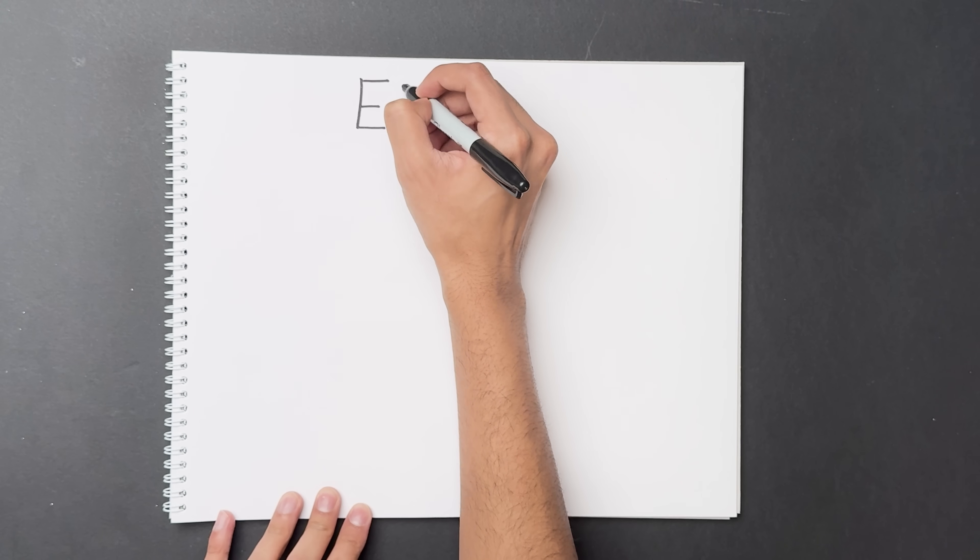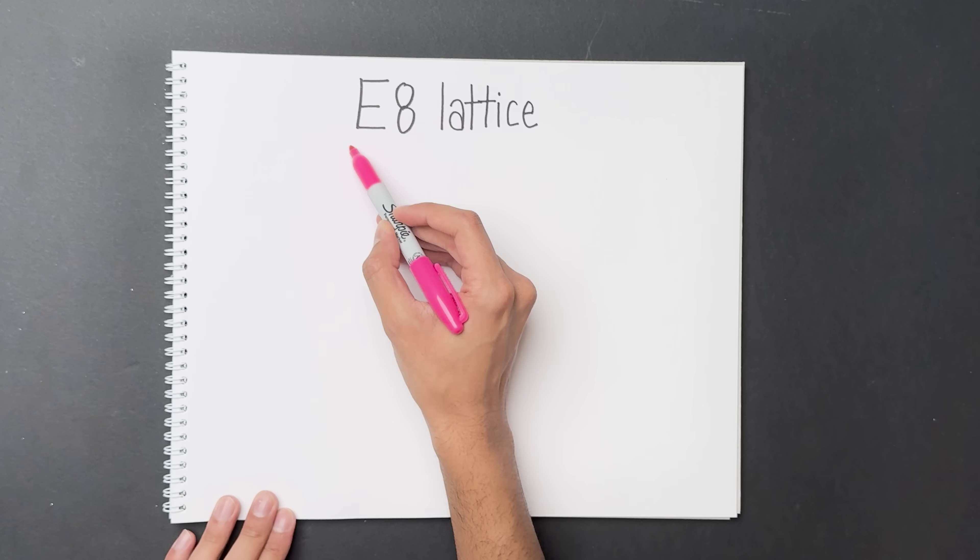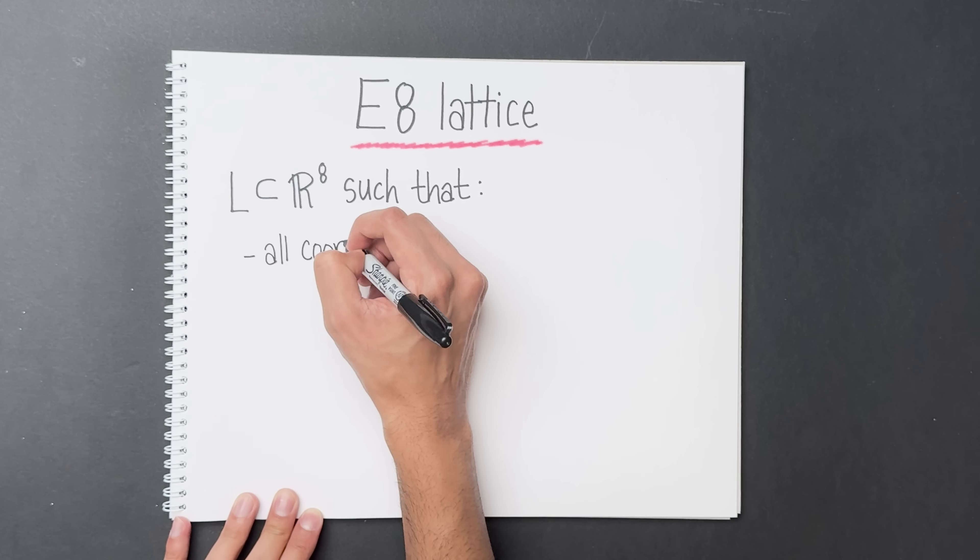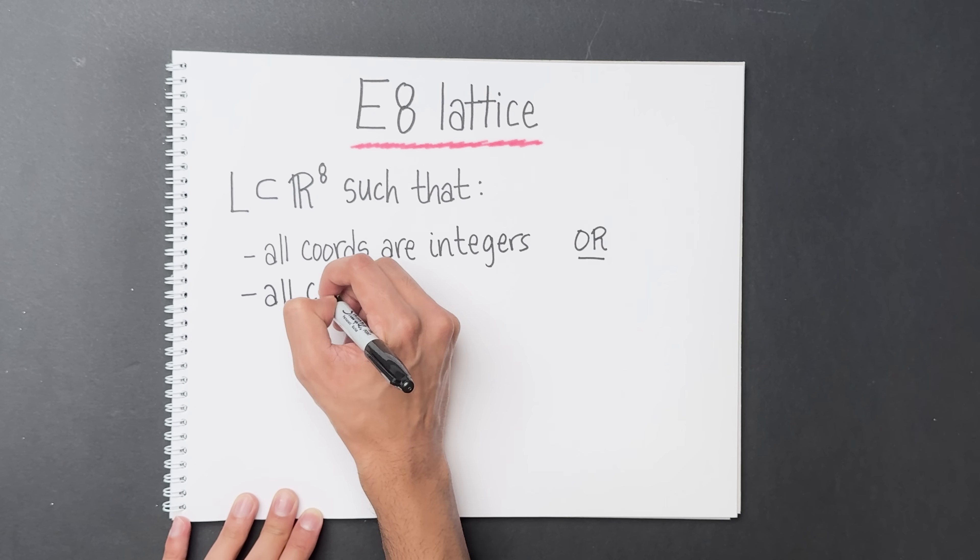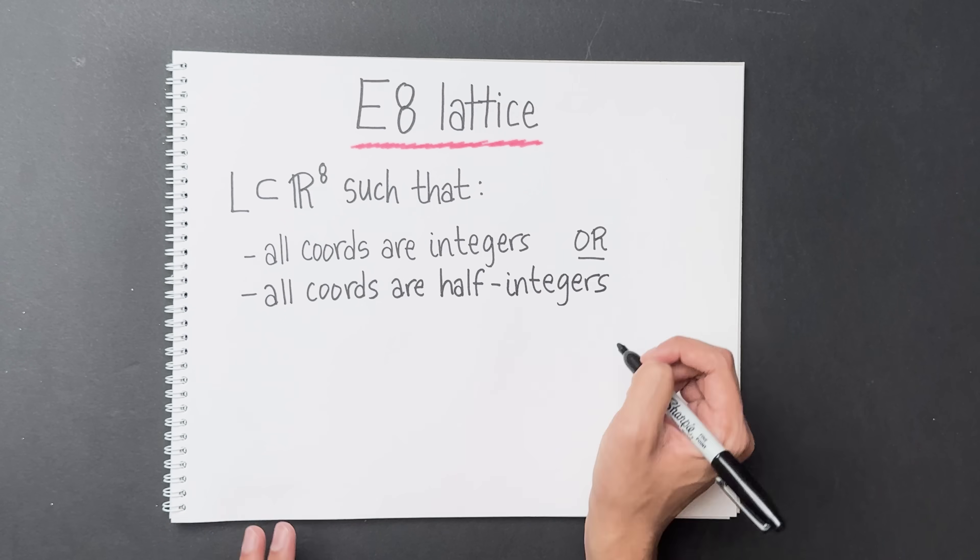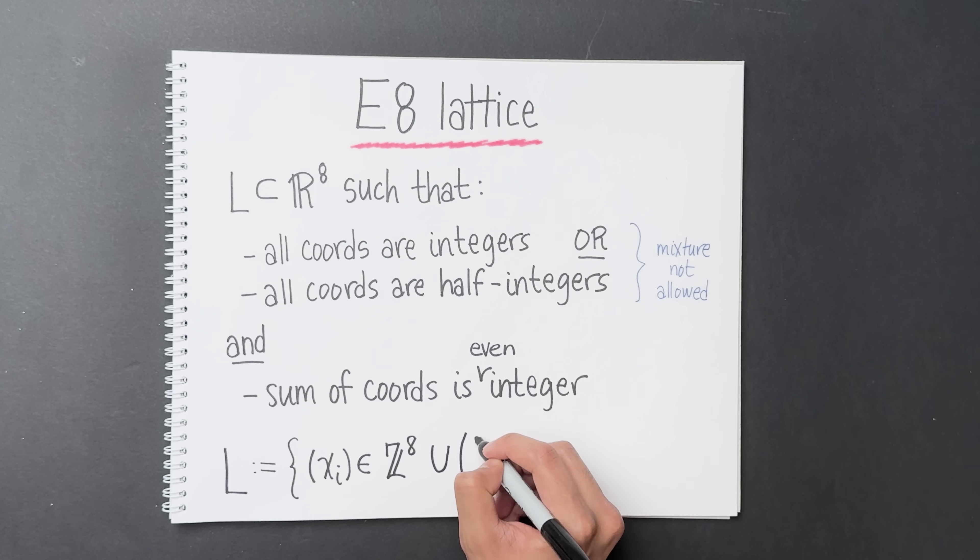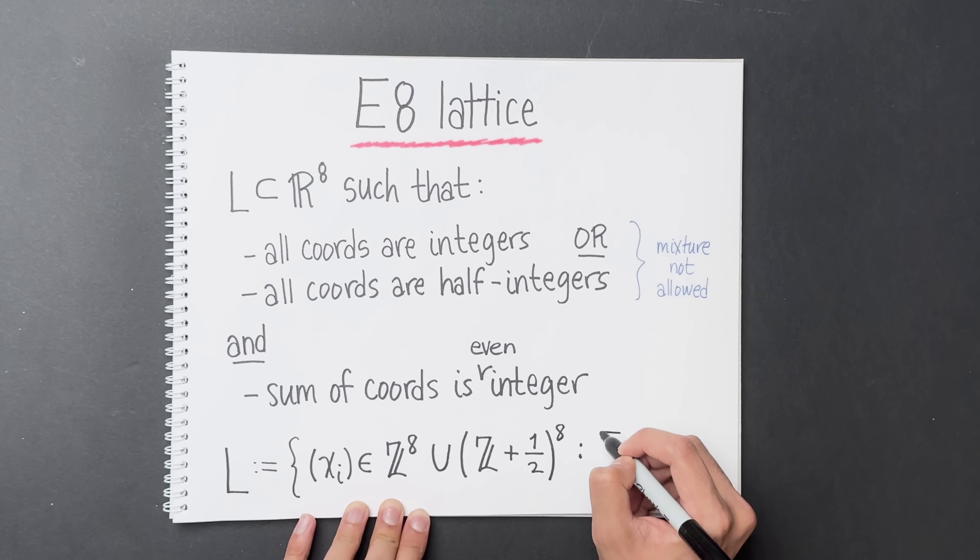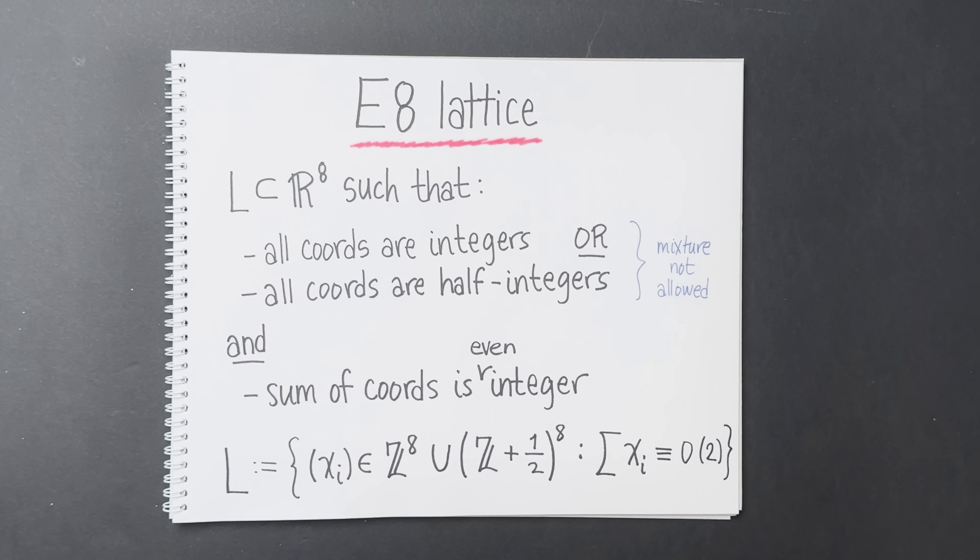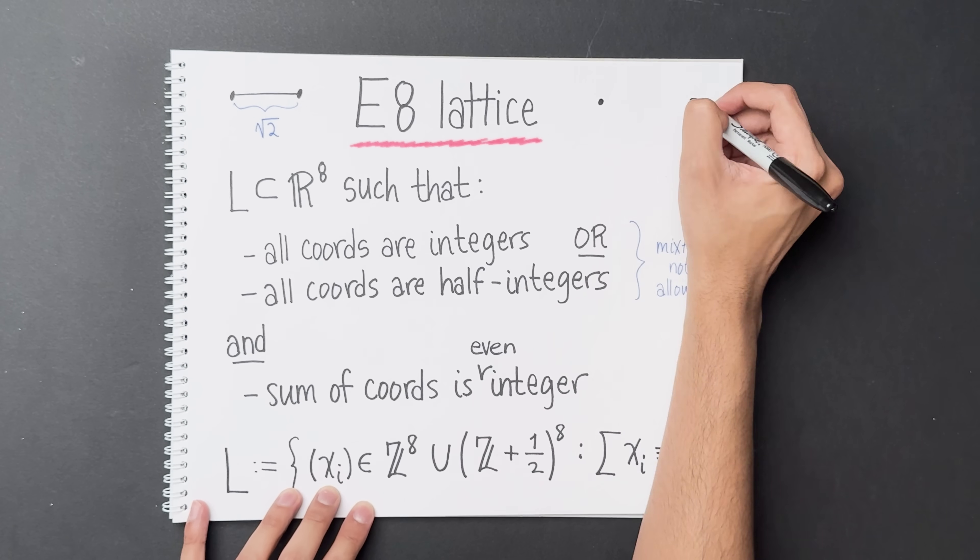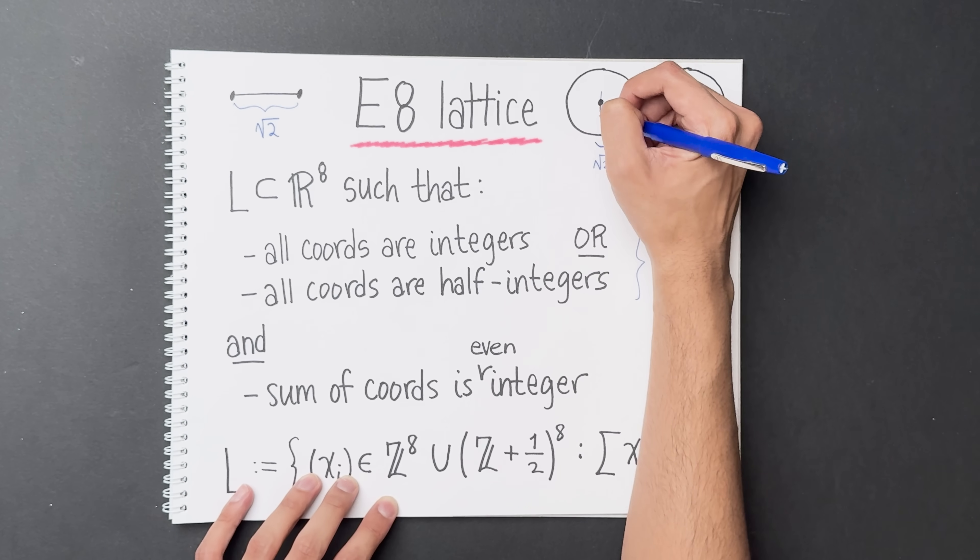But what is the best known packing in 8 dimensions? I never actually told you. It's called the E8 lattice. Fair warning, the definition is a little bit technical. It's defined as the set of all elements in R⁸ such that every coordinate is an integer or every coordinate is a half integer. A mixture of integers and half integers is not allowed. On top of that, the sum of all the coordinates must always be an even integer. In symbols, it's given as follows: the set of all vectors xi in Z⁸ union (Z + 1/2)⁸ such that the sum of the xi is 0 mod 2. A key fact is that the distance between neighboring points in this lattice is the square root of 2, which means you can place a sphere at each lattice point with radius √2 over 2.